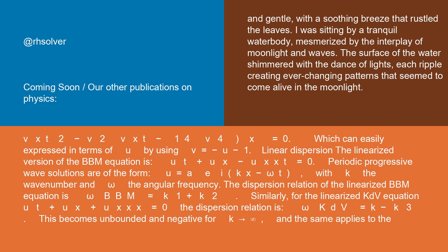Similarly, for the linearized KdV equation, u_t + u_x + u_xxx = 0, the dispersion relation is ω_KdV = k - k³.